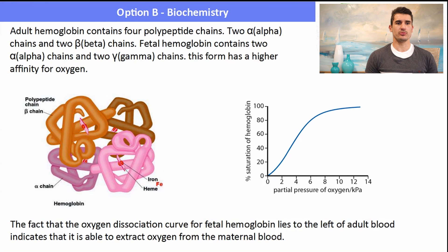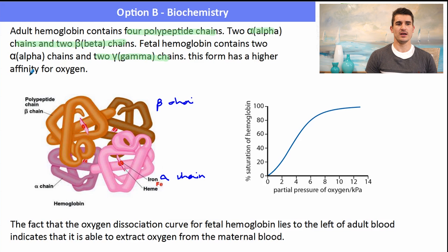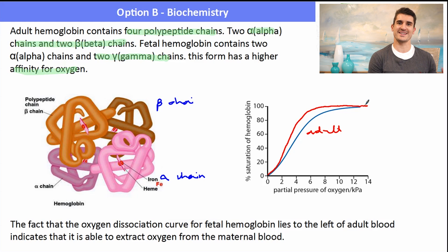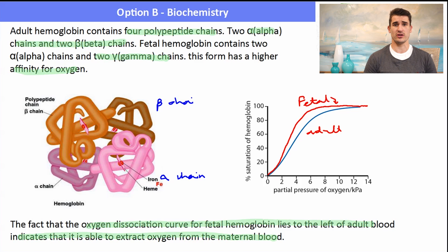Adult hemoglobin contains four polypeptide chains — two alpha and two beta chains. Fetal hemoglobin contains two alpha chains and two gamma chains, giving it a higher affinity for O₂. On the dissociation curve, fetal hemoglobin lies to the left of the adult curve. This higher affinity allows the fetus to extract oxygen from the mother's blood across the placenta.